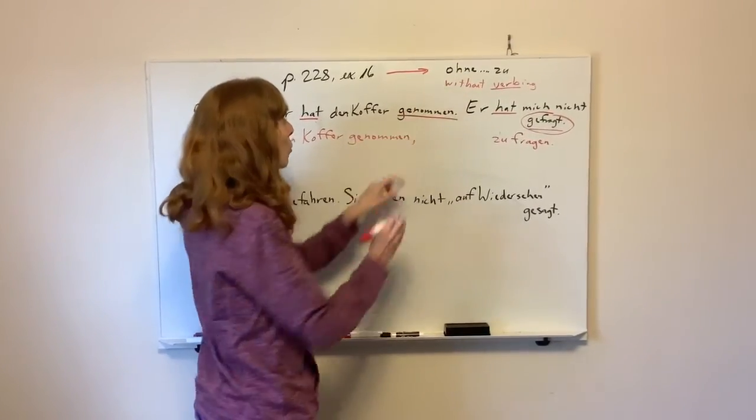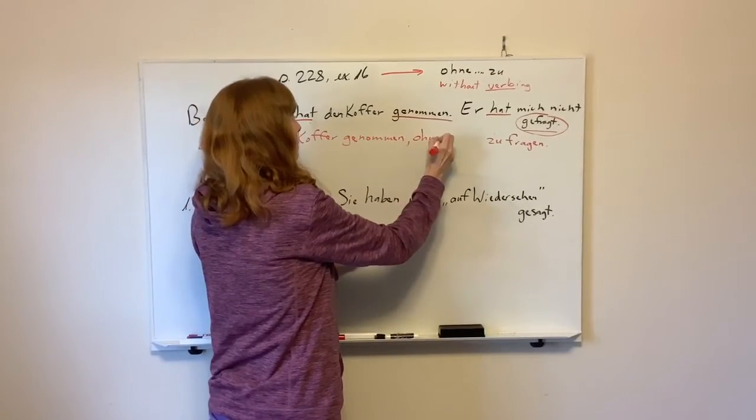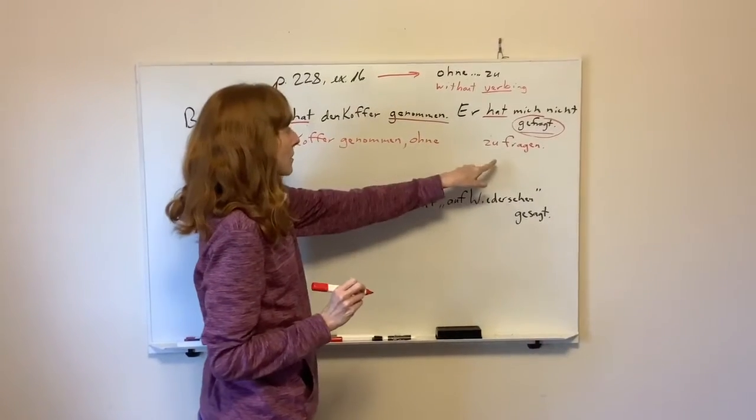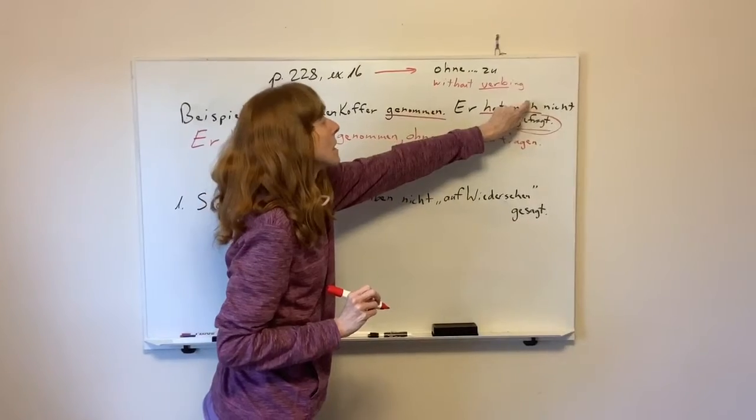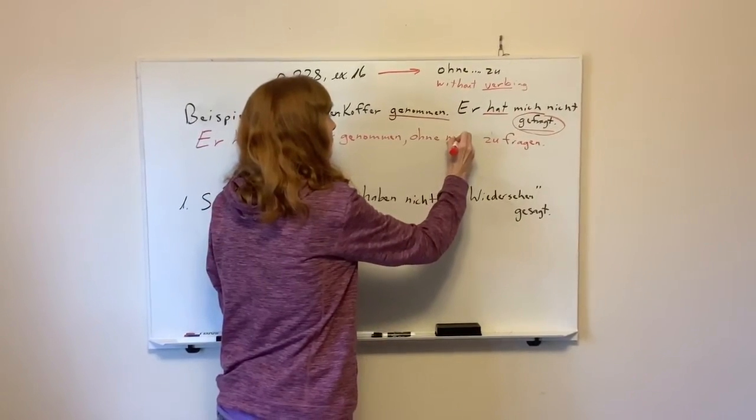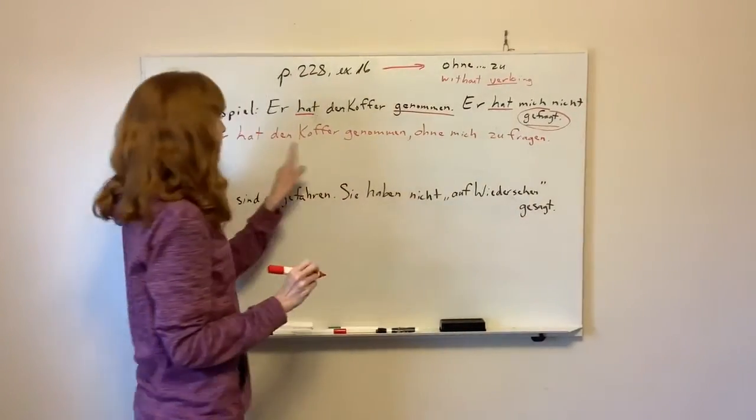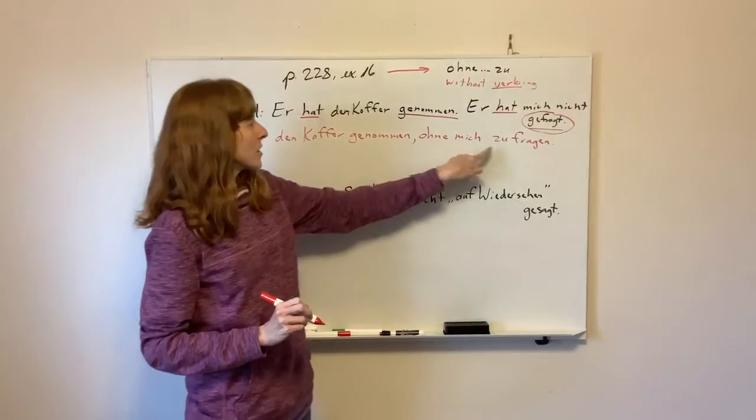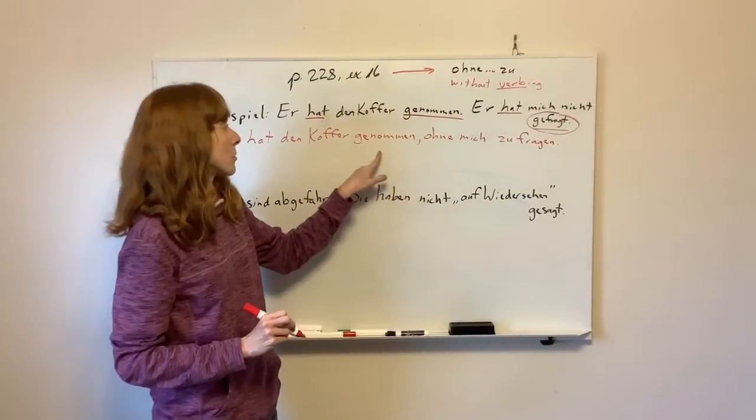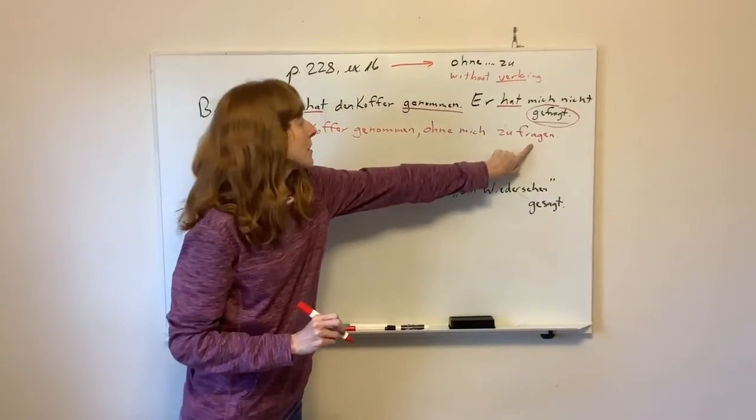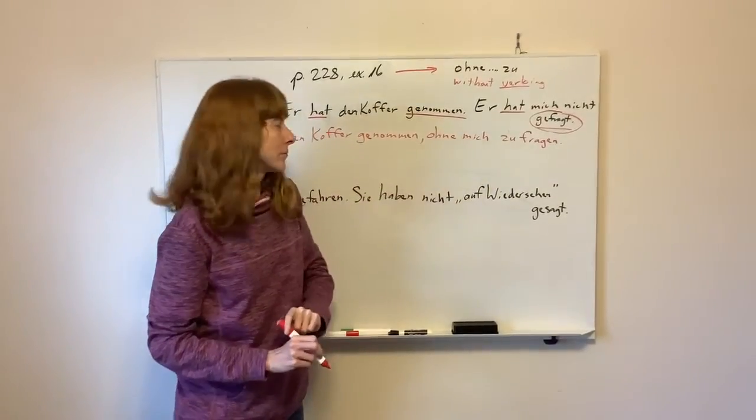Now, let's see. We need an ohne at the beginning. Without asking, without asking me, mich. Er hat den Koffer genommen, ohne mich zu fragen. He took the suitcase without asking me. Okay, number one.